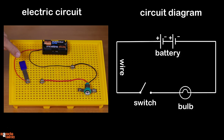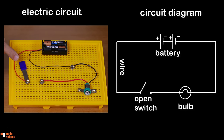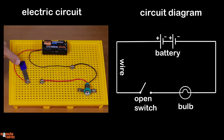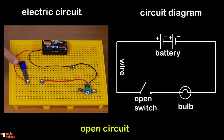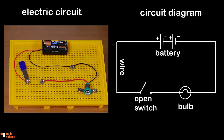When the gate is open like this, it's called an open switch. Here the switch is off. Since there is no closed continuous path, the current cannot flow. The bulb will not glow here. This is called an open circuit.